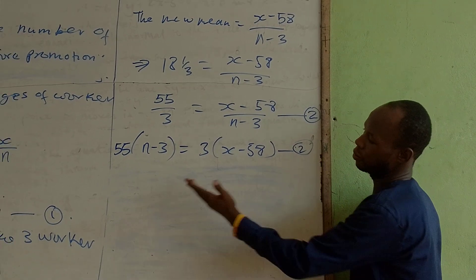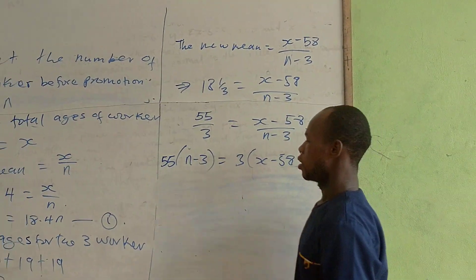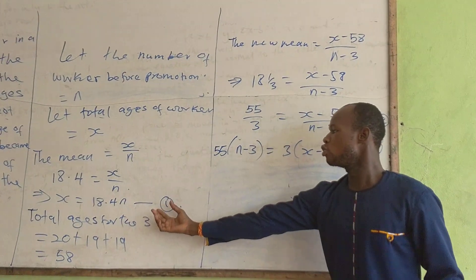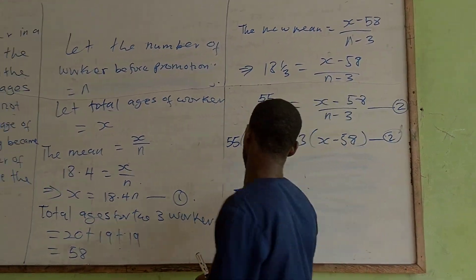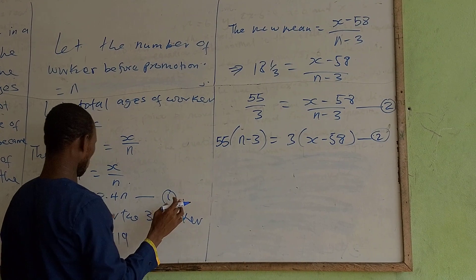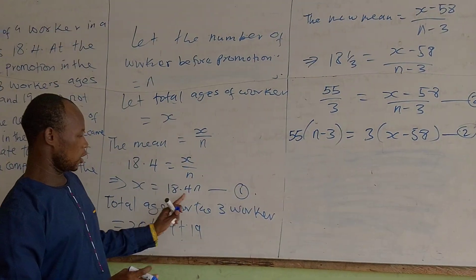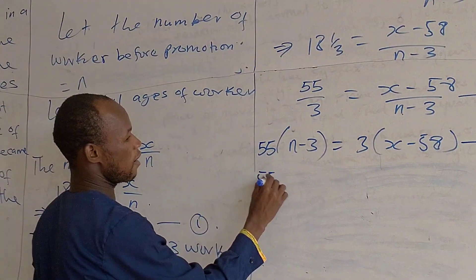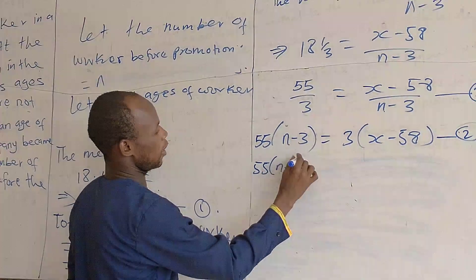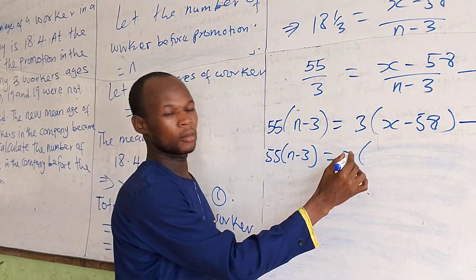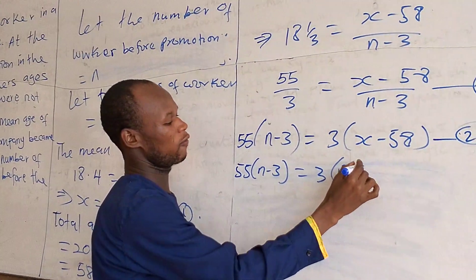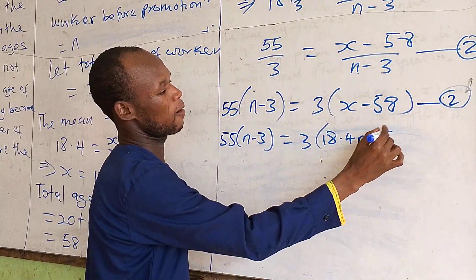So we substitute equation one into equation two. And doing that, we will have wherever we see x, we put 18.4n. So we have 55n minus 3 equal to 3 times 18.4n minus 58.